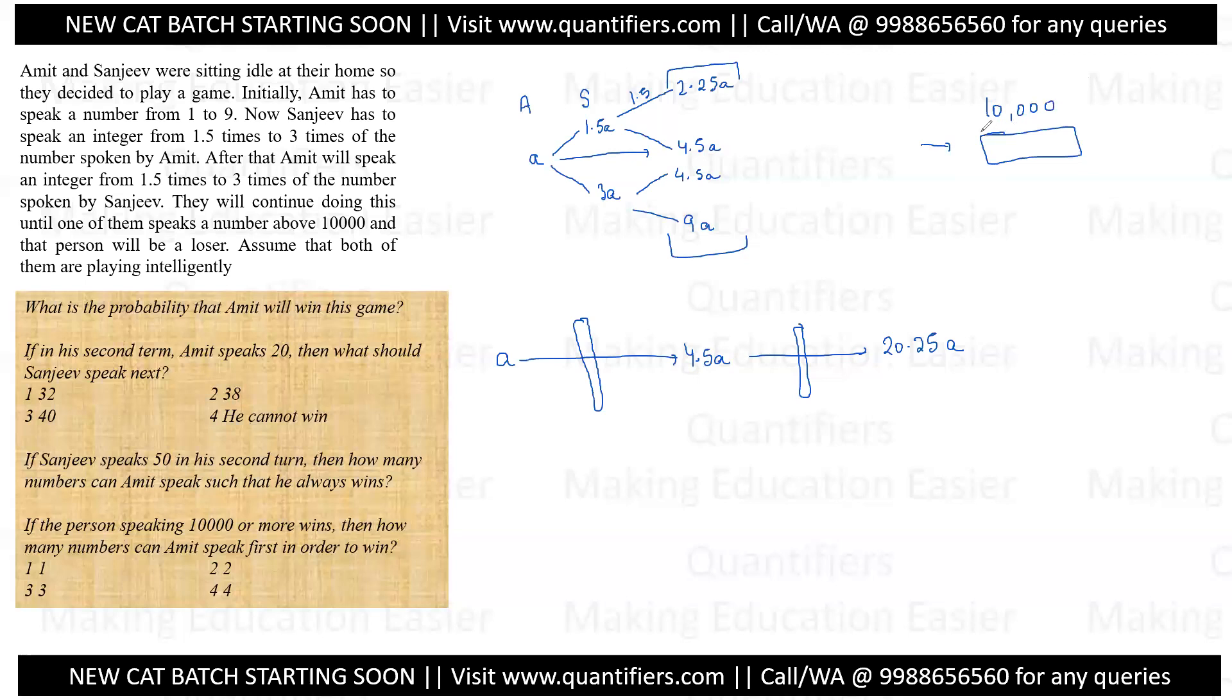The main idea is that no matter what Sanjeev will pick, Amit should reach a number as close to 10,000 as possible. Let us say 9,500 hypothetically. He wants to ensure Sanjeev has to do at least 1.5 times and cross 10,000, which means 10,000 divided by 1.5, which gives us 6,667. If Amit chooses a number from 6,667 to 9,999, then even if Sanjeev chooses the minimum possible multiplying factor, that is 1.5, Amit would lose. Remember Sanjeev is playing intelligently, so he will not do 3 times. He would try to take Amit to the losing end. So the minimum is 1.5 times. This is the range where Amit wants to reach - this is the winning range for him.